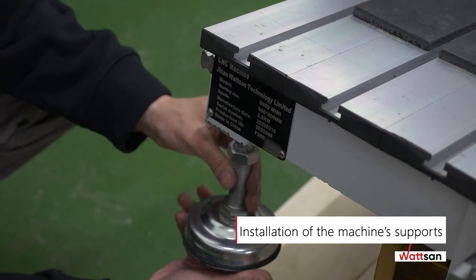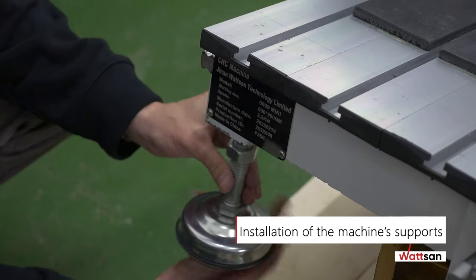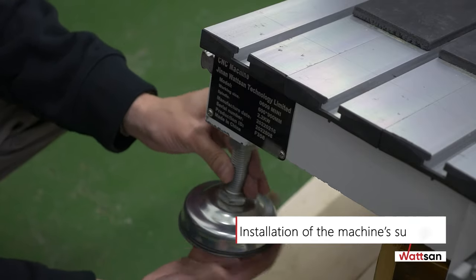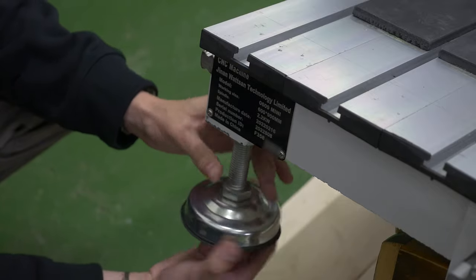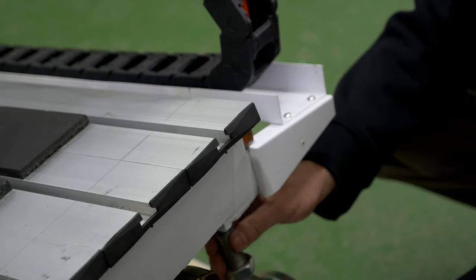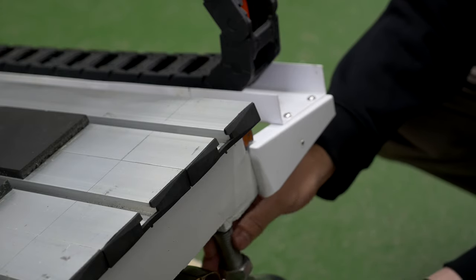Installation of the machine's supports. Lift one side of the machine and install the first pair of supporting legs. Then lift the second side of the machine and install the second pair of legs.